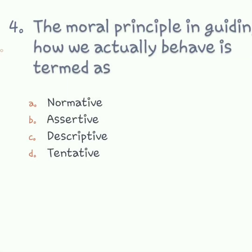Question number four: the moral principle in guiding how we actually behave is termed as what? We established two behaviors in critical thinking — descriptive and normative. The descriptive talks about how people actually behave, while normative is about what we ought to do or think. So the answer is C, descriptive enterprise.